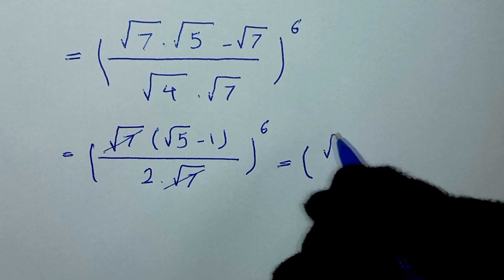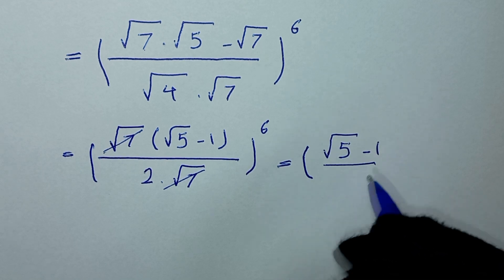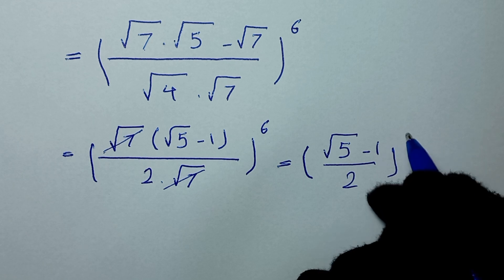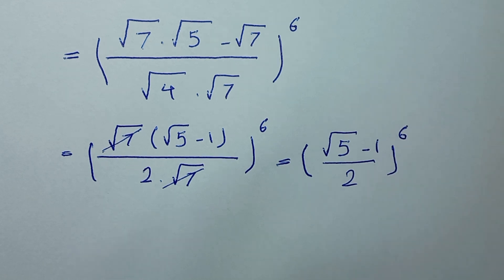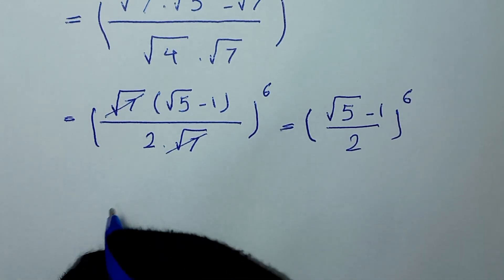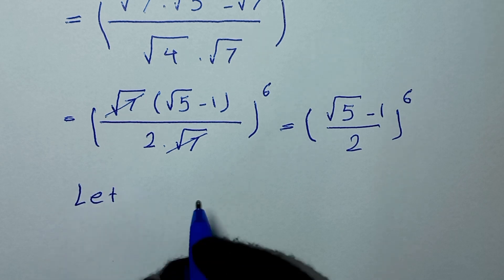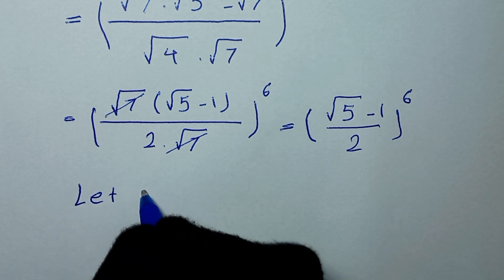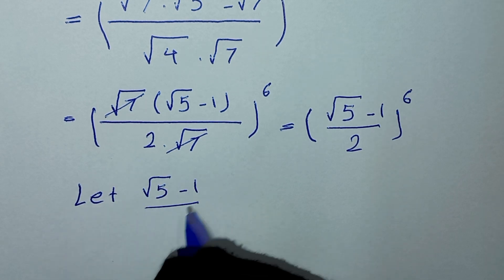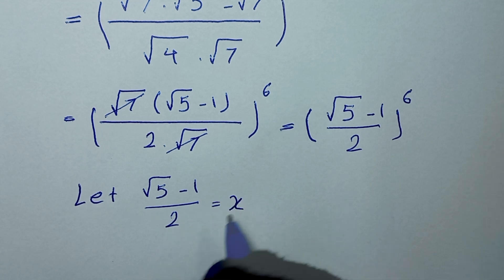It will be square root of 5 minus 1 over 2, to the power of 6. In the next step, we let x equal to square root of 5 minus 1 over 2.